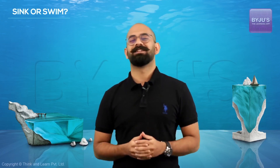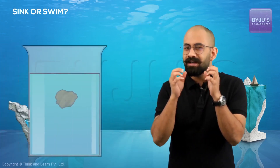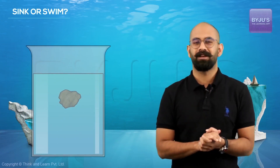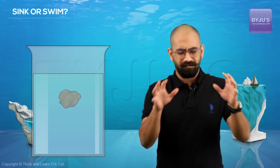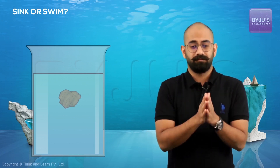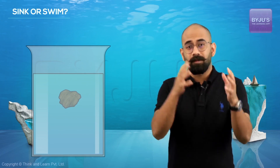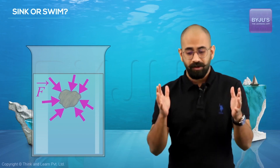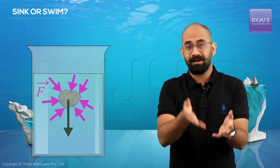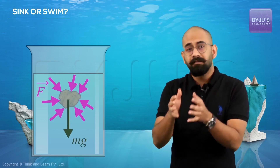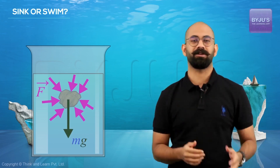To understand how this works, let's first analyze the case where there is a weirdly shaped body inside a fluid. What would be the forces acting on this body? There will obviously be forces from the surrounding fluid in all directions, and of course the force of gravity will also be acting on it — let's say it's Mg, where M is the mass of the weirdly shaped body.